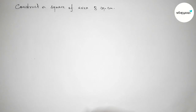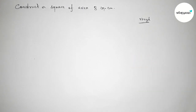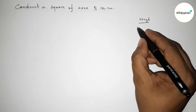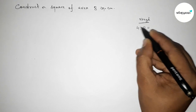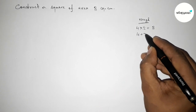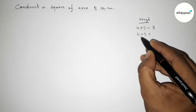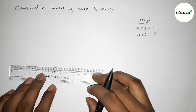First of all, discussing here some important calculations. We can write here 4 into 2, which is obviously 8. And now 4 plus 2 equals to 6. So we have to first draw a line segment of length 6 centimeter here.